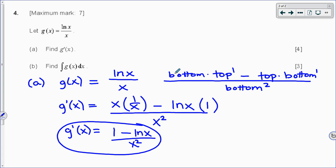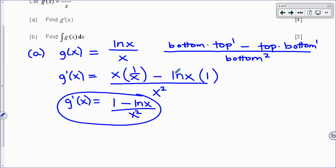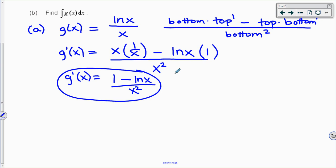And then in part b, we're asked to find an antiderivative. So let's set up what that would look like first. Antiderivative or integral of ln x over x, and then there's a dx.